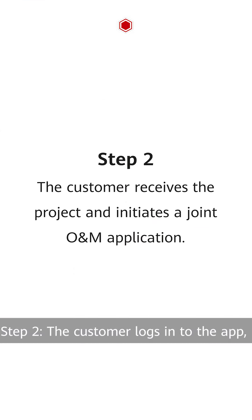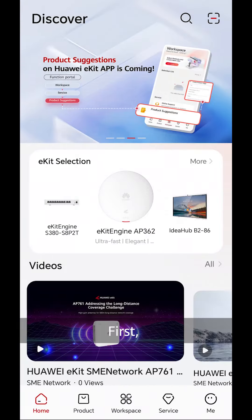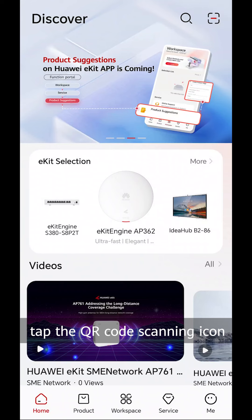Step 2. The customer logs into the app, receives the project, and initiates a joint O&M application. First, tap the QR code scanning icon in the upper right corner and scan the QR code sent by the project delivery engineer.